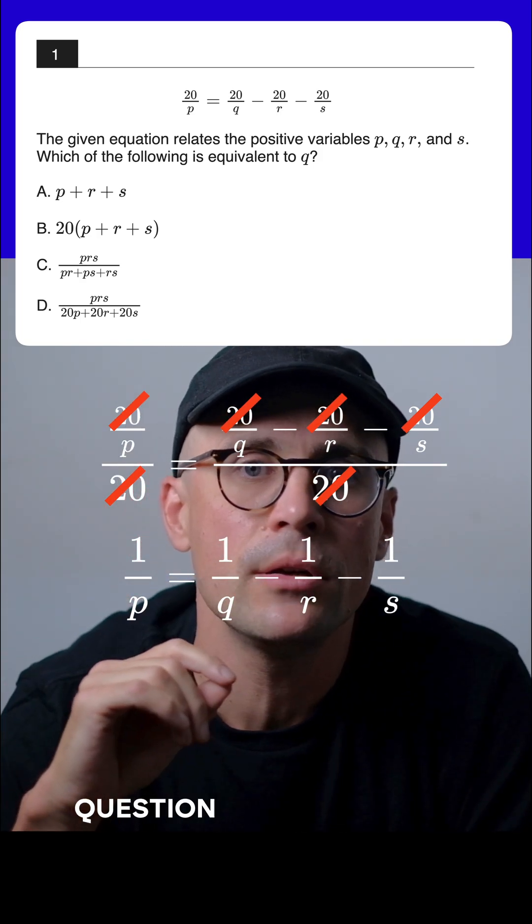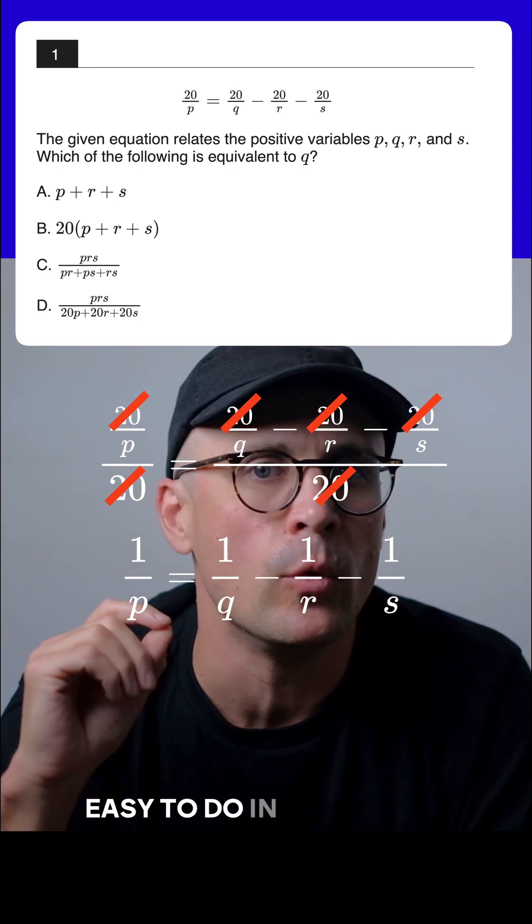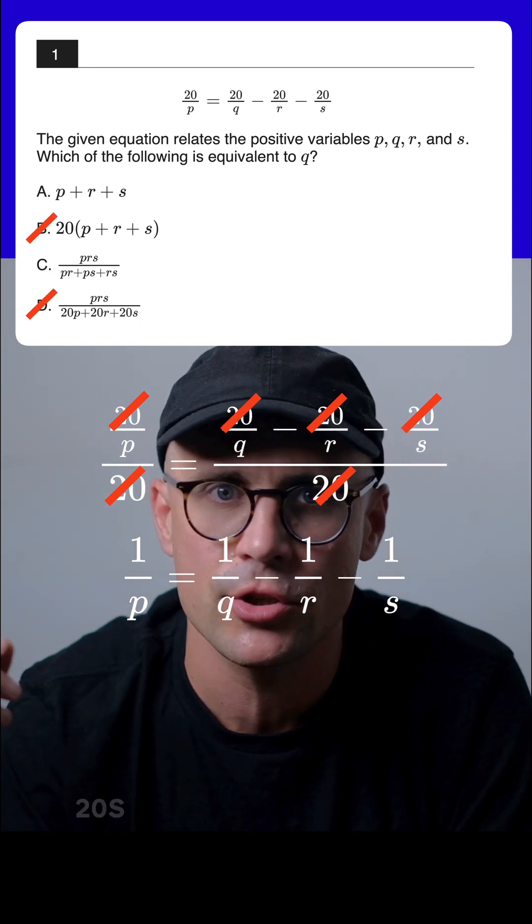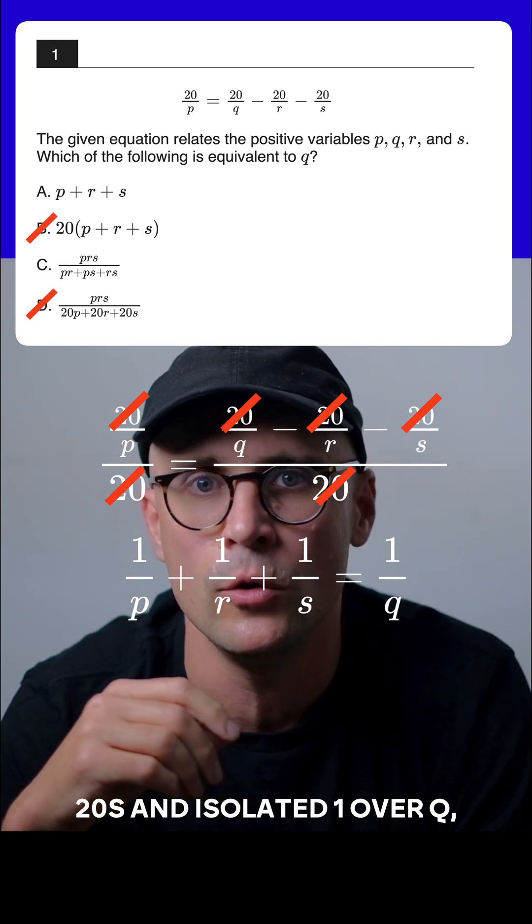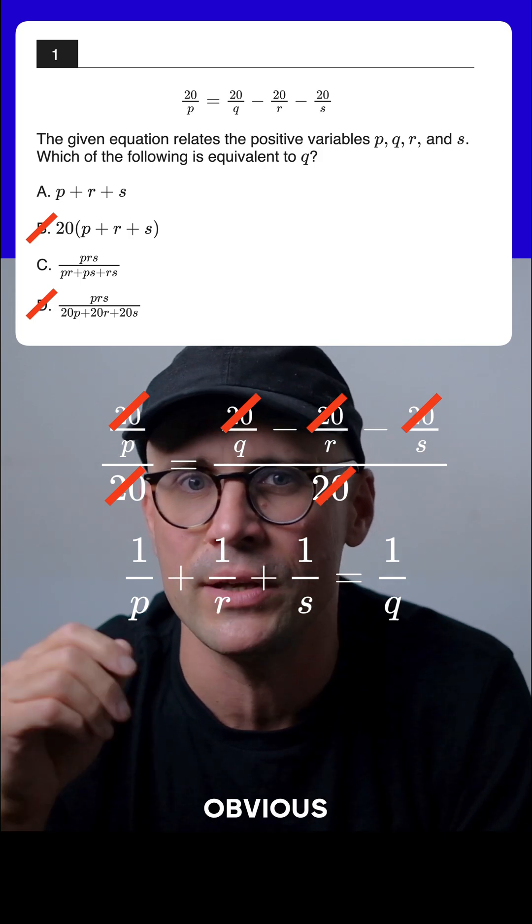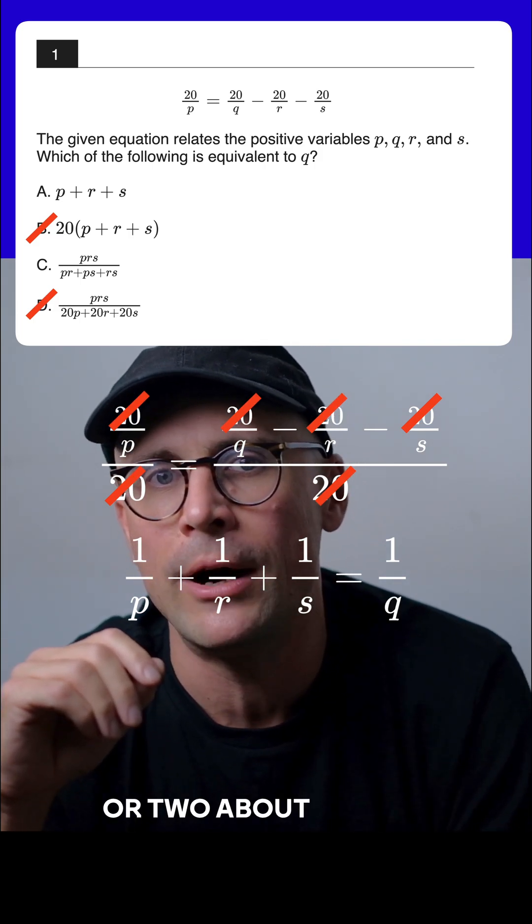In fact, this last question is surprisingly easy to do in your head. Once you've slashed the 20s and isolated 1 over q, the answer is kind of obvious if you know a thing or two about adding fractions.